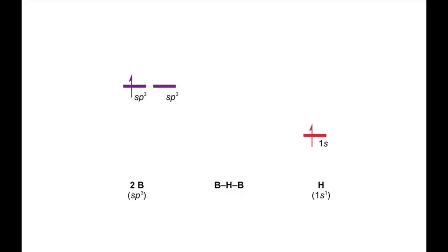The in-phase combination of boron orbitals interacts with the hydrogen orbital to give bonding and anti-bonding orbitals, while the out-of-phase combination of boron orbitals is non-bonding, so stays at the same level as the boron orbitals.